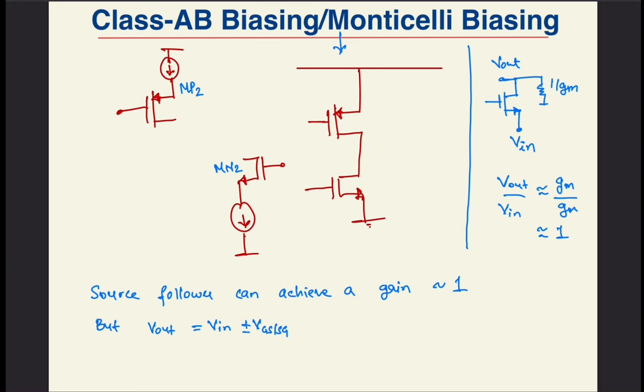We already have MP2 and MN2. So we know that the impedance looking into the source is of the order of 1 by GM, if the impedance at the drain isn't too large. Thus, if you connect the source and drain as shown, the resulting voltage gain would approximately be GMP2 over GMN2, which can be made close to 1. Quite neat indeed.